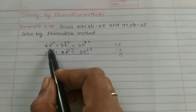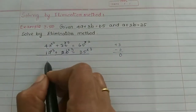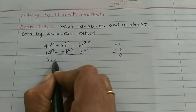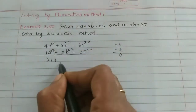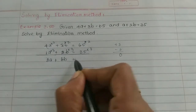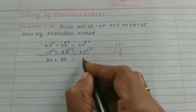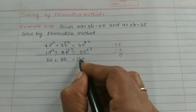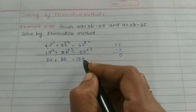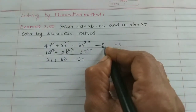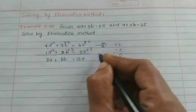Now, multiply the first equation by 2: 4a times 2 is 8a, plus 3 times 2 is 6b, equal to 65 times 2 which is 130. So the first equation becomes 8a plus 6b equals 130.